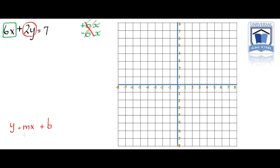So we'll take away the 6x, and that will leave 2y by itself. But it's very important: what we do to one side, we've got to do to the other side. So we've got to take away 6x on this side as well.